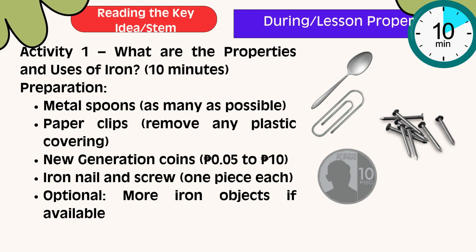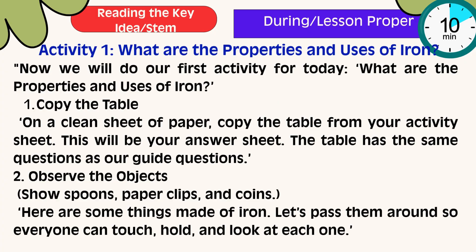Activity 1: What are the properties and uses of iron? This activity is for 10 minutes. For our preparation, you must have a metal spoon — as many as possible — paper clips with any plastic coverings removed, iron nails, and screws. Optional: more iron objects if available. Now, we will do our first activity for today: What are the properties and uses of iron?